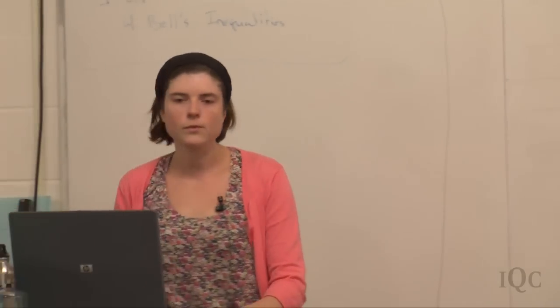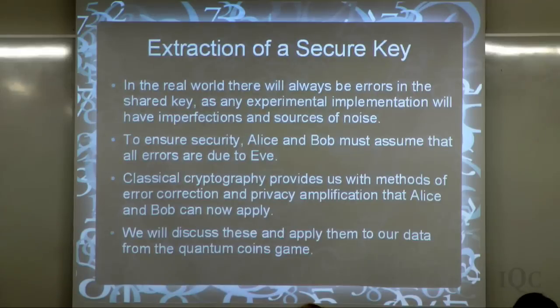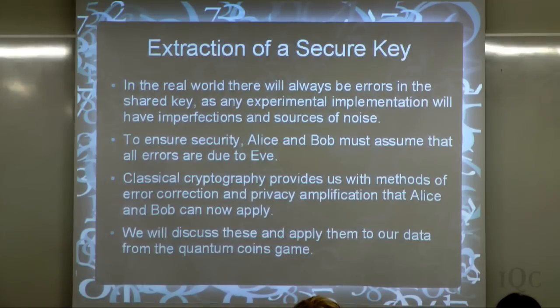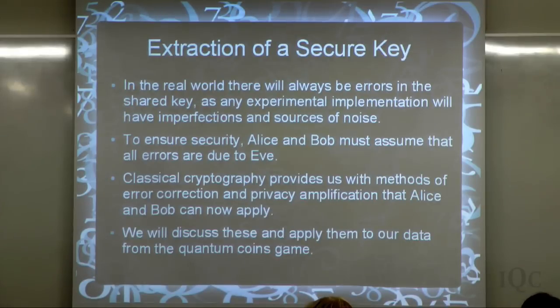Today we're going to talk about how to extract a secure key from the data that Alice and Bob get in the first round. We'll use the data we got yesterday to demonstrate this so you can see physically what happens. In any real experimental implementation of these ideas there will be errors — losses in the channel, errors introduced in the channel between Alice and Bob, preparation errors, or errors in Bob's measurement.